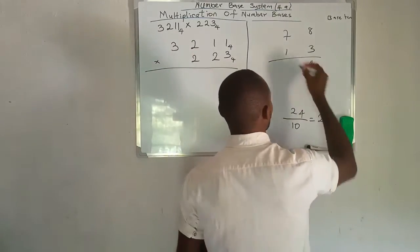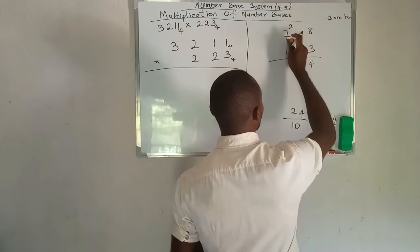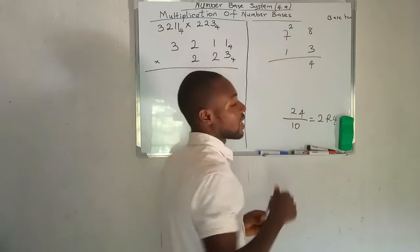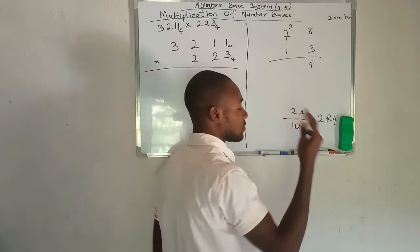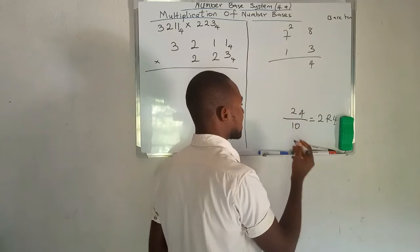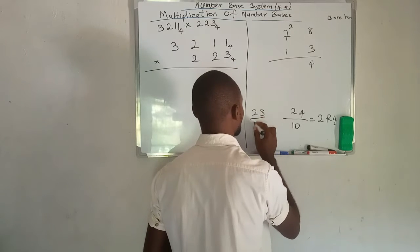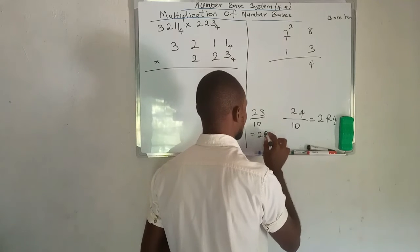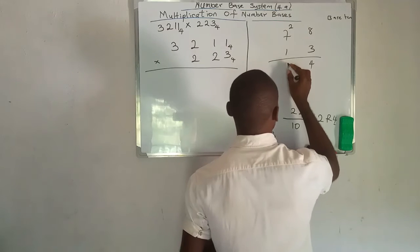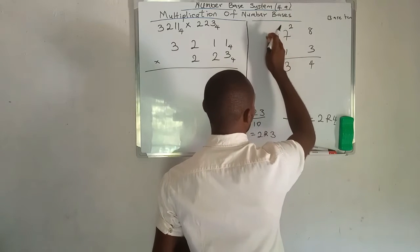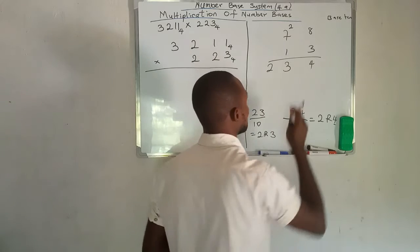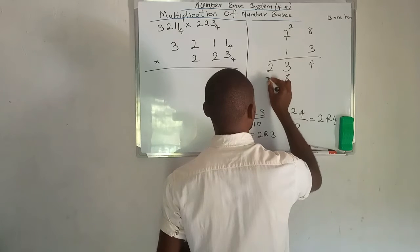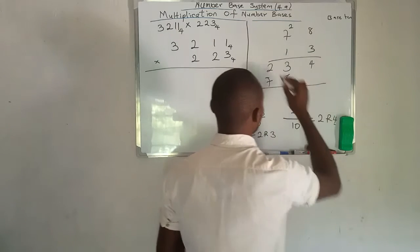We have 2 carried over, and then 3 times 7 is 21. And 21 plus 2 gives us 23. So 23 is also bigger than a single digit in base 10, so we divide it by 10 also. 23 divided by 10 gives 2 remainder 3. So we write 3 here and take 2 to the next position. But there's no other number, so we bring it down. Then we use 1 to multiply, giving 8 here and 7 here.